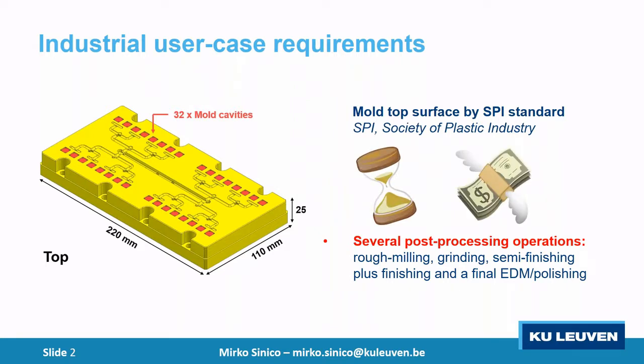So the research question is: can we try to improve the surface quality of laser powder bed fusion parts? For this specific application we're talking about top surface. And can we, if we improve the surface quality, skip at least one or two post-processing operations, saving time and money for the part?